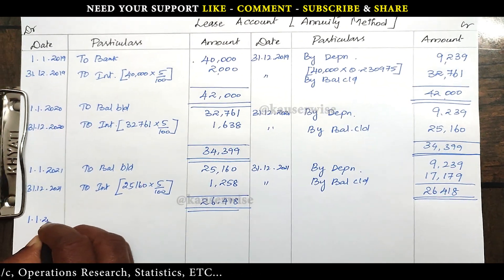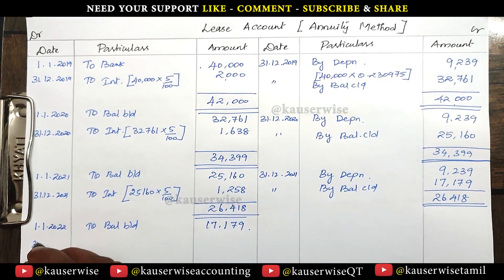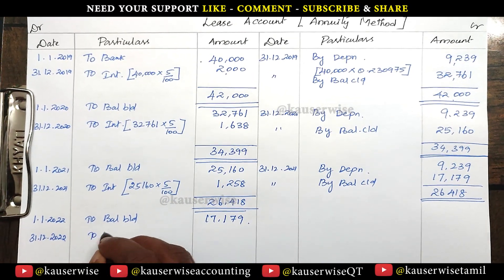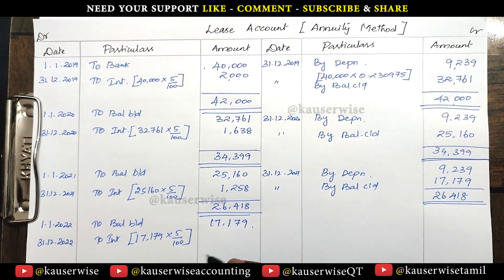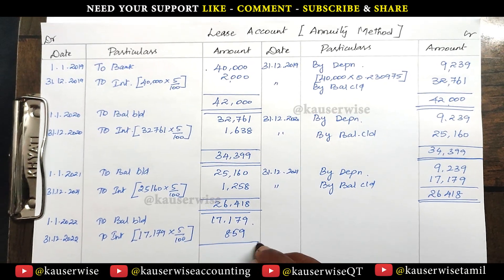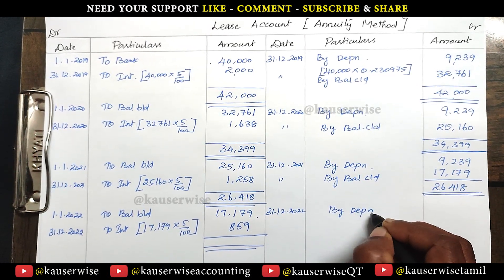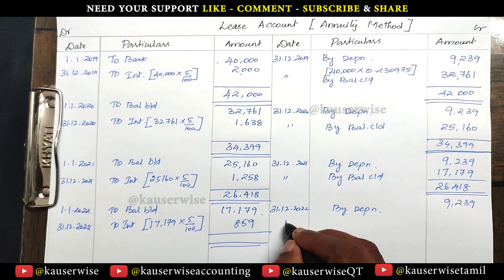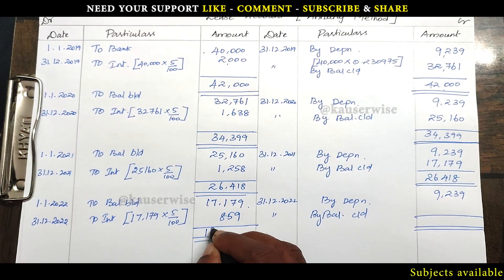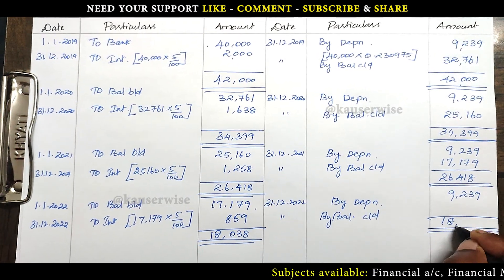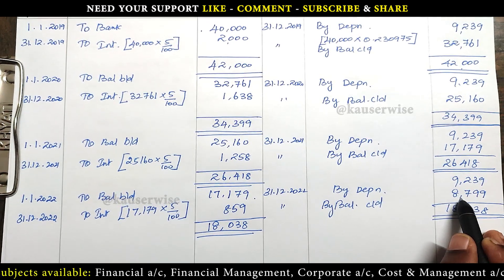On 1st January 2022, balance brought down: 17,179. At the end of the year, interest: 5% on 17,179 = rupees 859. By depreciation — same value — rupees 9,239. By balance carry down: total 18,038. Balancing figure — closing balance — is rupees 8,799. This becomes the opening balance for 2023.